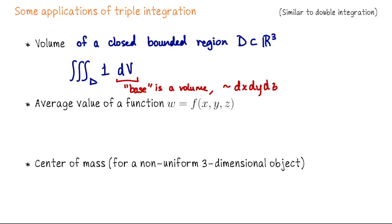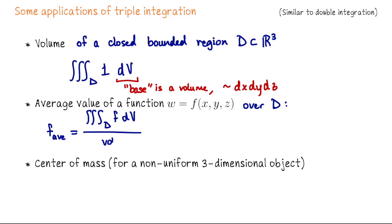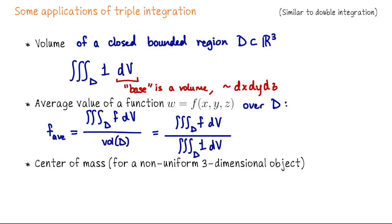Just like with double integration, with triple integration we can compute the average value of a function — specifically the average value of a scalar-valued function of three variables over some domain D. The average value is a number obtained by integrating F over D and dividing by the volume of D, which we can rewrite as the triple integral of F over D divided by the triple integral of 1 over D. Lastly, we'll talk about computing the center of mass for a non-uniform three-dimensional object, giving us the point (x-bar, y-bar, z-bar).